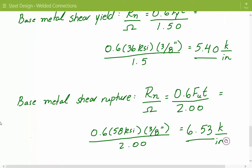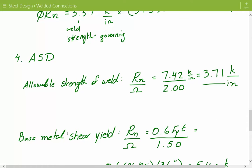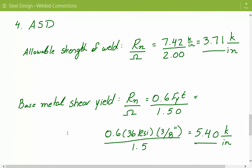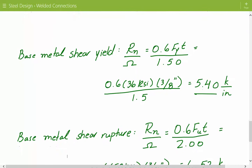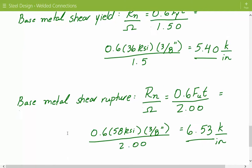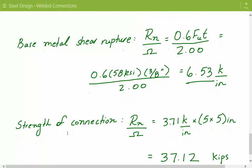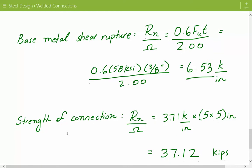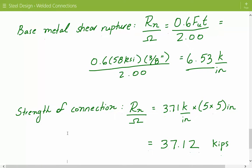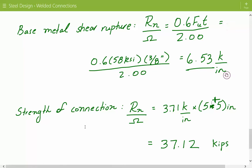Comparing the three ASD values — 6.53, 5.40, and 3.71 kips per inch — the weld strength at 3.71 is the governing one; base metal shear is not governing. To get the connection strength, we multiply 3.71 by the total weld length of ten inches (two five-inch welds), giving 37.1 kips as the ASD strength of the connection.